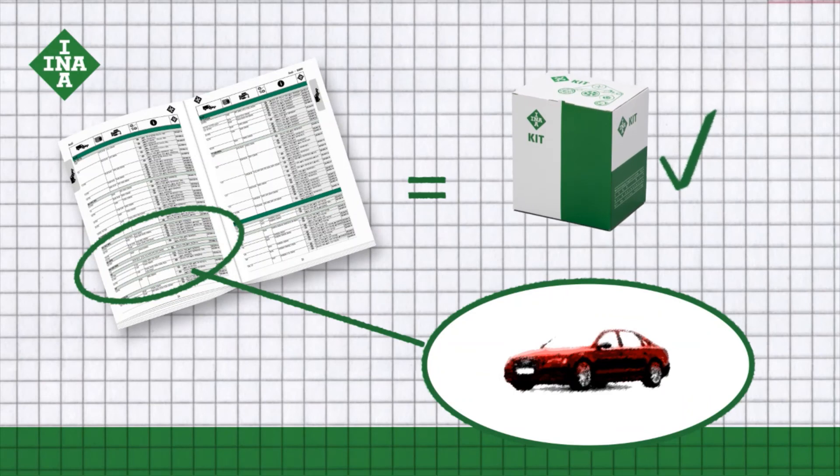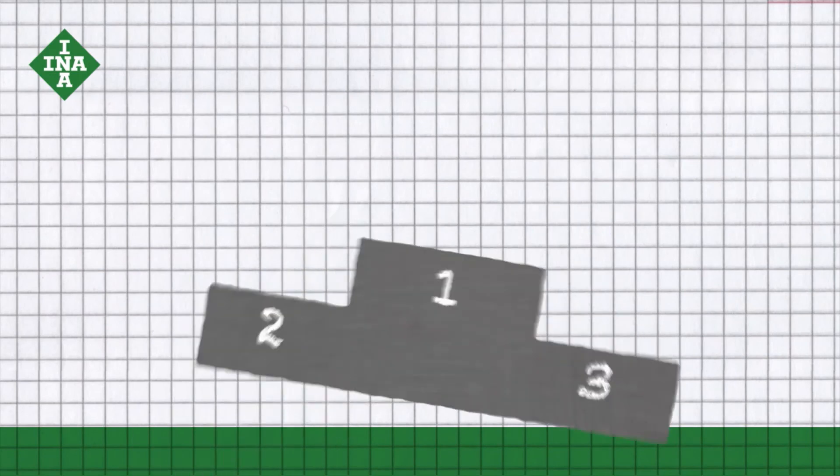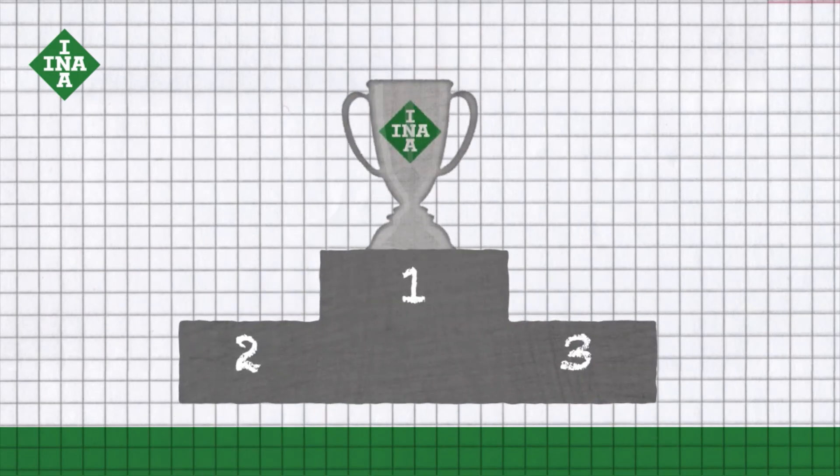There can be no more mix-ups between different kits for the same application. All of this is available in our renowned OE quality, because Ina is the market leader in feed system components.